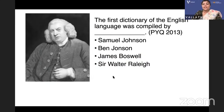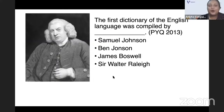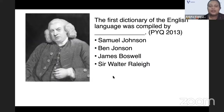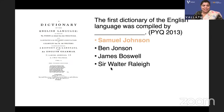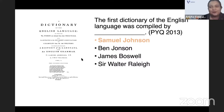The first dictionary of the English language was compiled by whom? It's a PYQ. Options: Samuel Johnson, Ben Jonson, James Boswell, or Sir Walter Raleigh? It was Dr. Samuel Johnson.